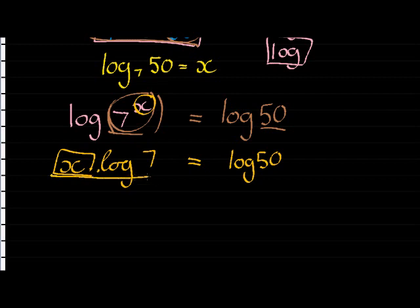So to get x on its own, I just need to divide away what is being multiplied. That log 7 is going to divide, but what I do on the left I do on the right. Log 7. And here I see I've got now my x on its own.